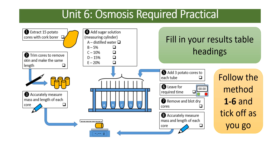You should have done a required practical about osmosis where you add pieces of potato into different concentrations of sugar solution. You chop the potato into the same length and same diameter discs using a cork borer — that's a control to ensure fair testing. You measure them with a ruler to make sure they're all the same length, then add the same volume of solution into test tubes. The independent variable — the thing you're changing — is the percentage of sugar solution.